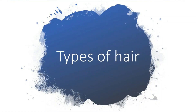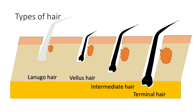Before going into the details of hair anatomy, let's discuss the different types of hair present on the skin. There are four types: lanugo hair, vellus hair, intermediate hair, and terminal hair. Lanugo hair is wool-like hair present over fetal skin. It is usually shed by eight to nine months of gestation or after birth.